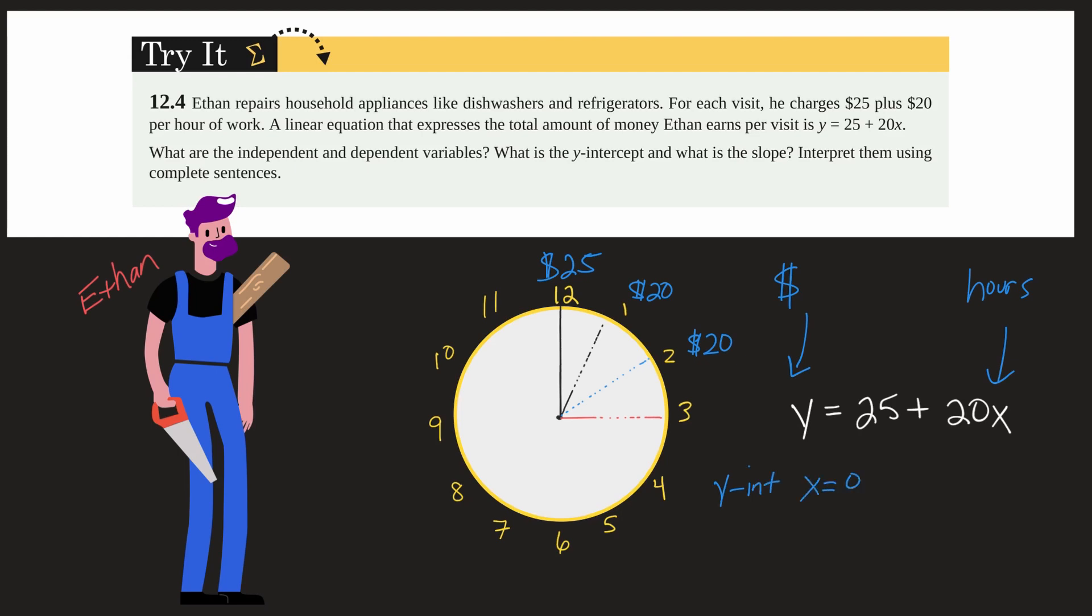So all we do is substitute zero in where x is. So y equals 25 plus 20 times zero. 20 times zero is zero. So we have y equals 25. So the y-intercept is the point zero. That's what x is. And then 25 for y. So that is where this line will cross the y-axis.